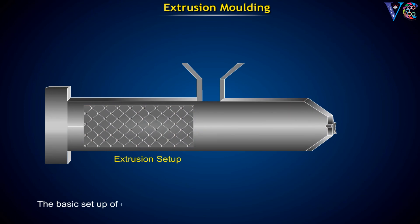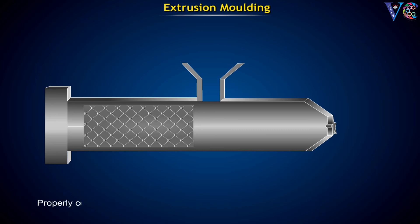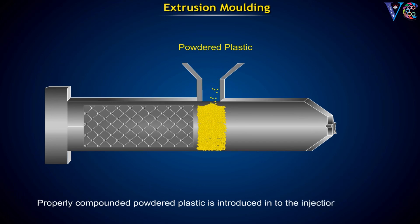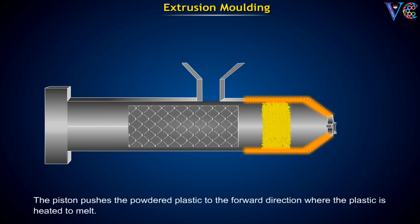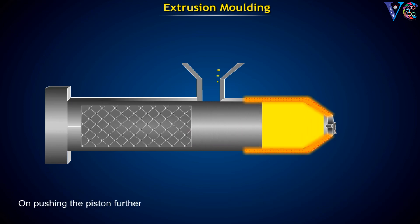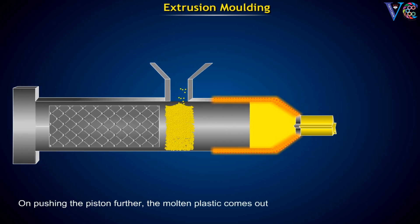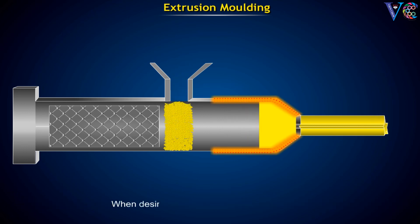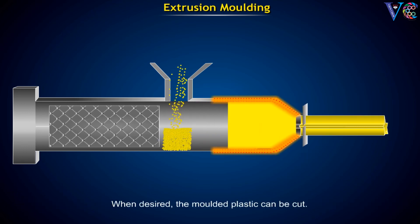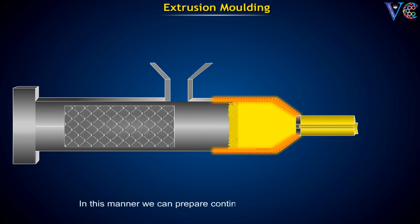In the extrusion molding setup, properly compounded powdered plastic is introduced through the hopper. The piston pushes the powdered plastic in the forward direction, where the plastic is heated to melt. On pushing the piston further, the molten plastic comes out assuming the shape of the die. When desired, the molten plastic can be cut. In this manner, we can prepare cable of any desired length.